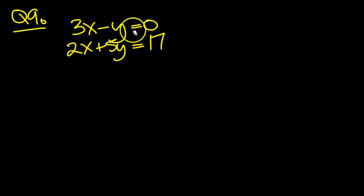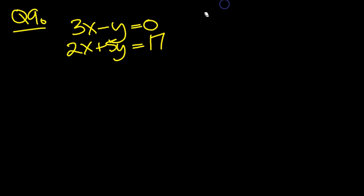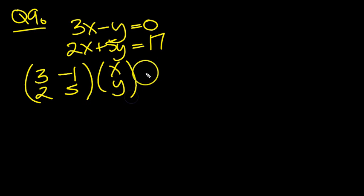Okay, let's have a look at question 9. Let's write this in matrix form. So we've got 3, minus 1, 2 and 5, and xy equals 0, 17.